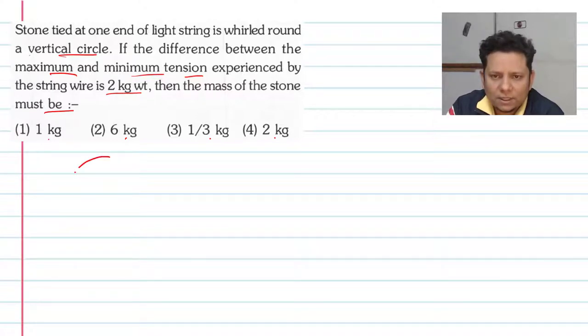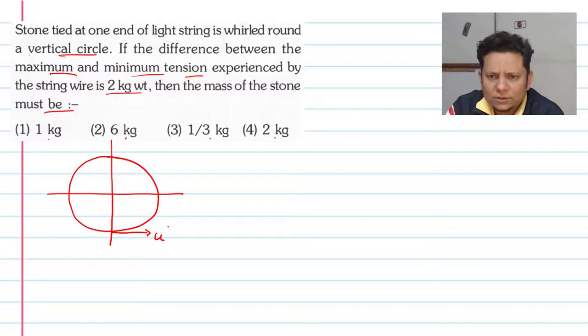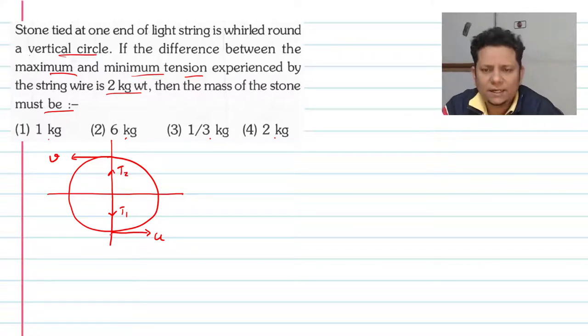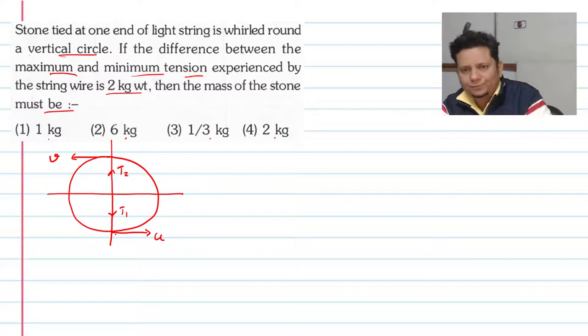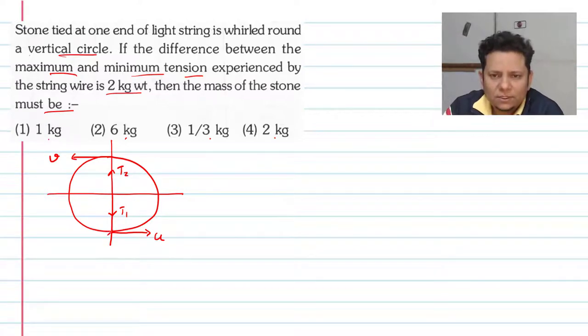Let's say you have a particle in a vertical circle. You have velocity u here at the lowest point, and velocity v at the highest point. Here is your tension T1 at the bottom, and T2 at the top. We know that maximum tension is at the lowest point and minimum tension is at the highest point.